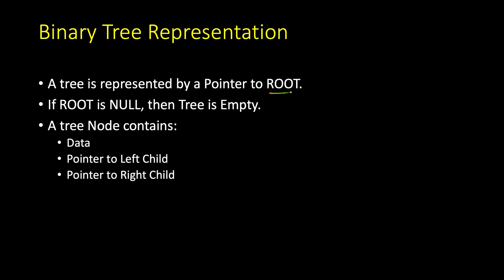So it's represented as pointer to root. And what if root is null? So if root is null, then the tree is empty. The tree has zero nodes. Because if tree has any node, then the topmost node is the root by definition. So if it's null, then that means it has zero nodes.